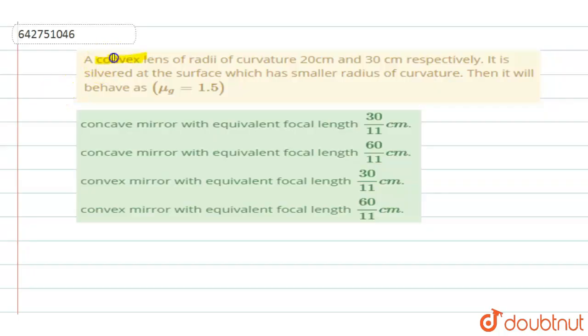The convex lens of radius of curvature 20 cm and 30 cm respectively. It is silvered at a surface which has a smaller radius of curvature, then it will behave as. So the refractive index of the glass they have given it as 1.5.